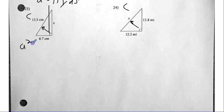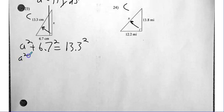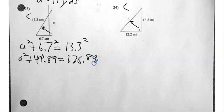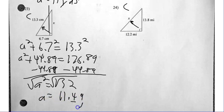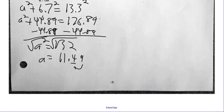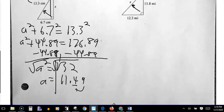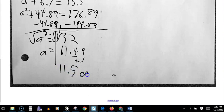Number twenty-three — I do have C squared, so I don't have A squared. I have B and I have C. Make sure C is in the right place. So A squared plus 44.89 equals 176.89. I subtract — A squared equals 132. Now I simply square root both sides, and A equals 11.49. Rounding tells me to round up. So the answer is 11.5 centimeters.